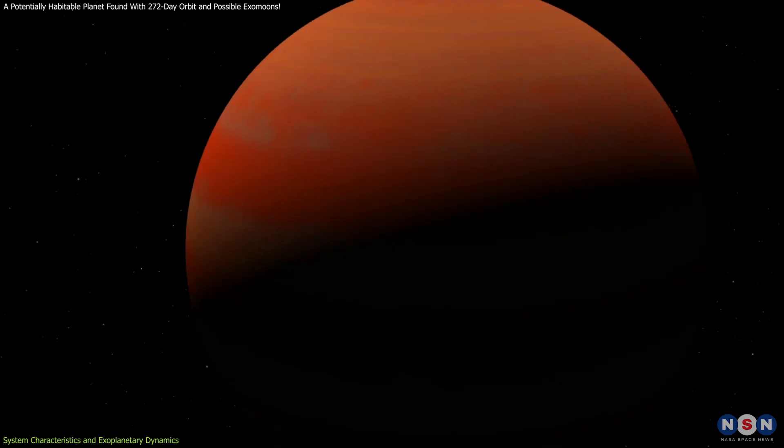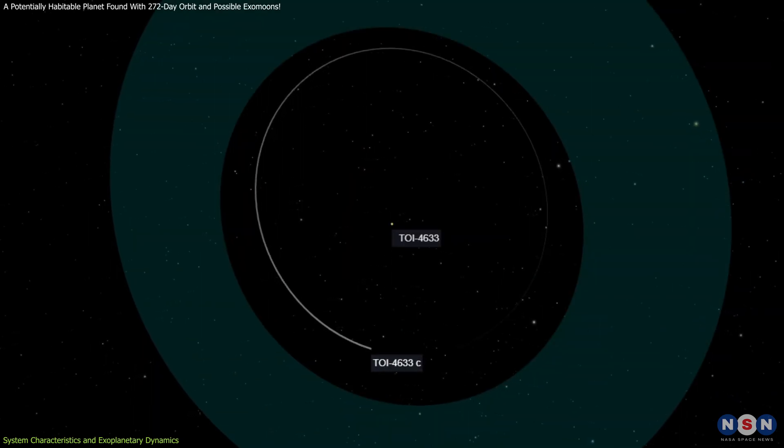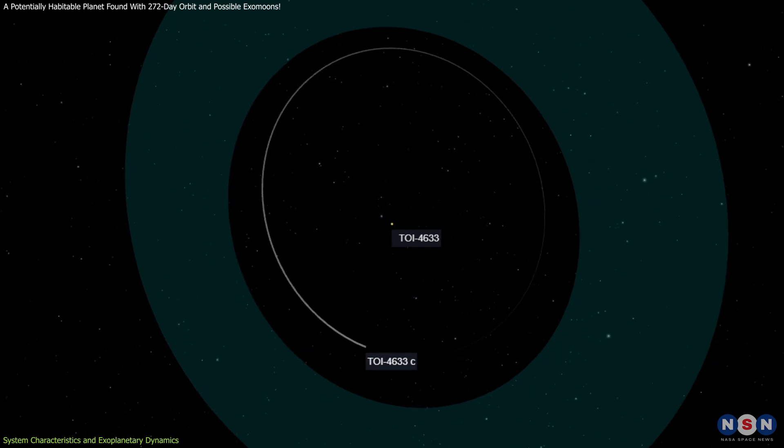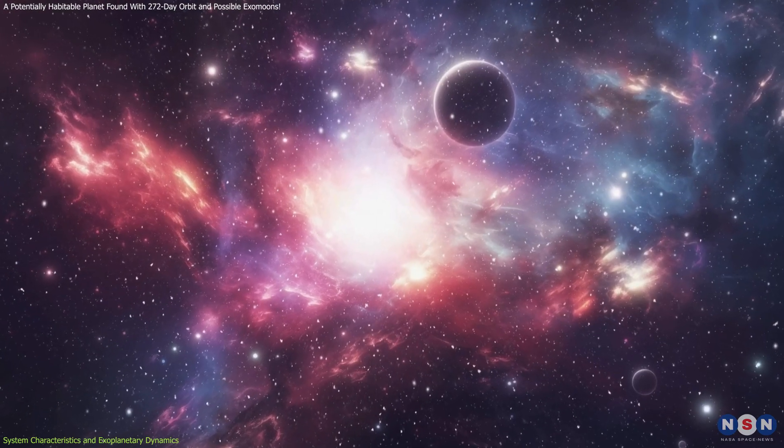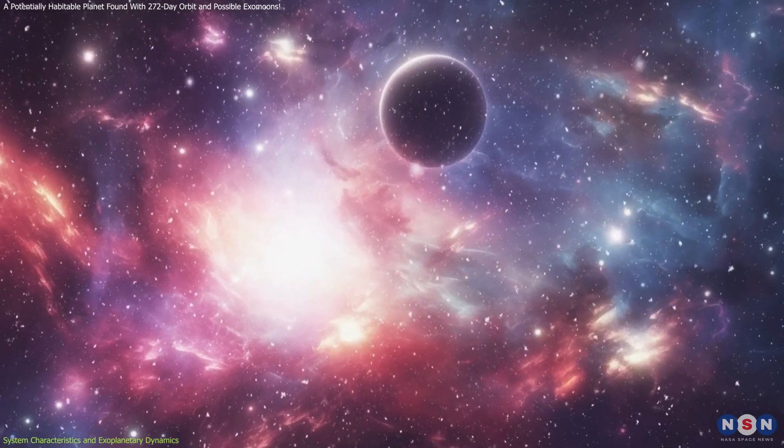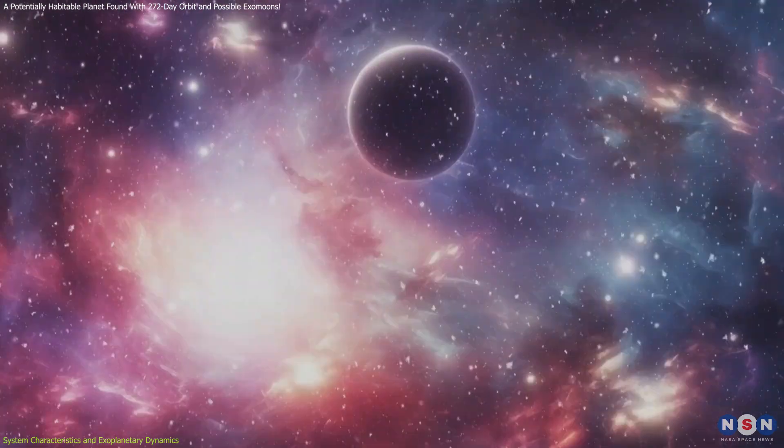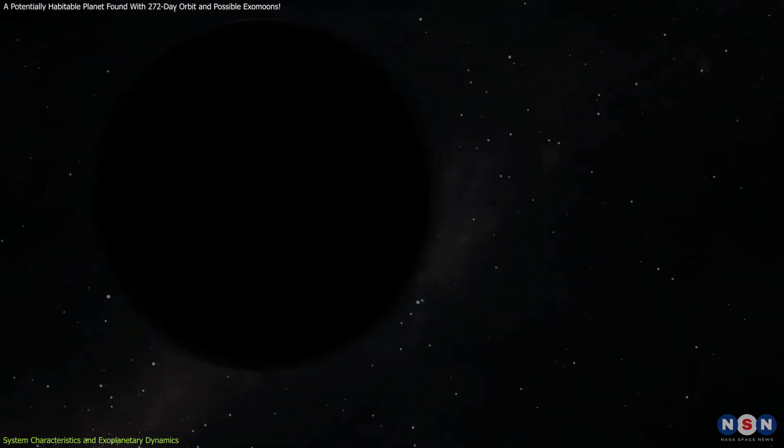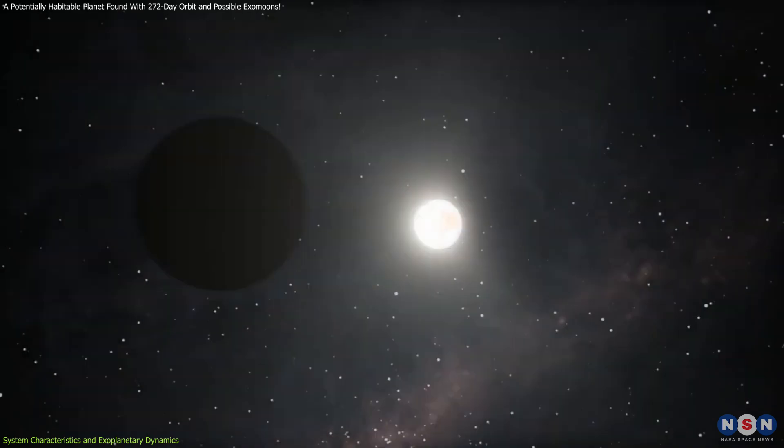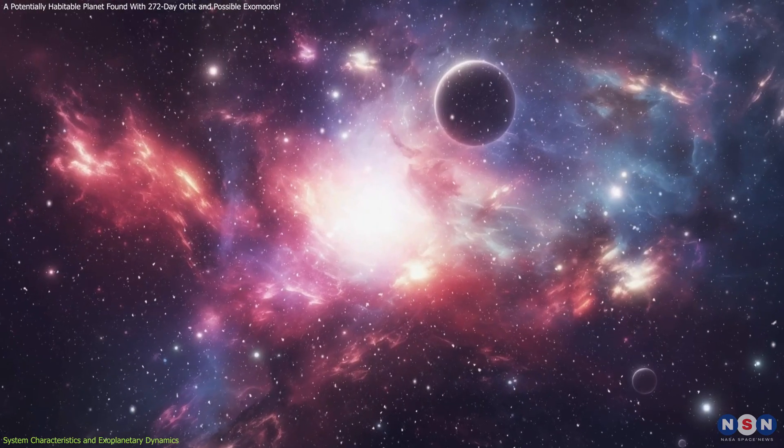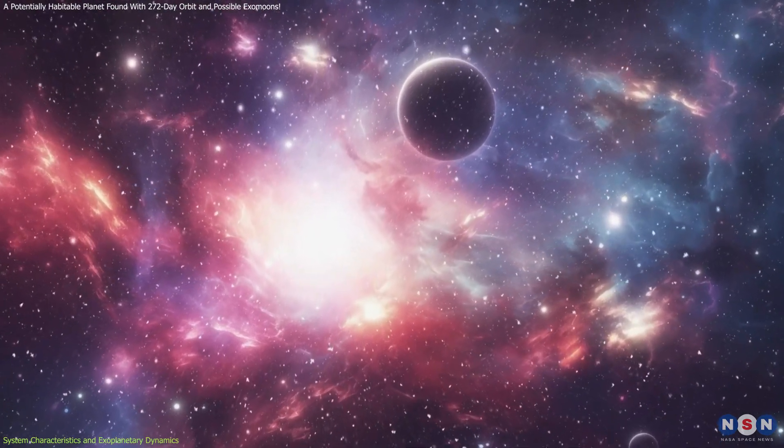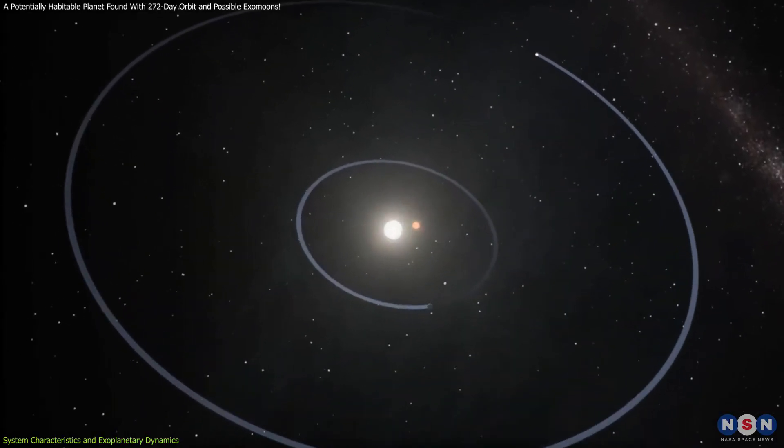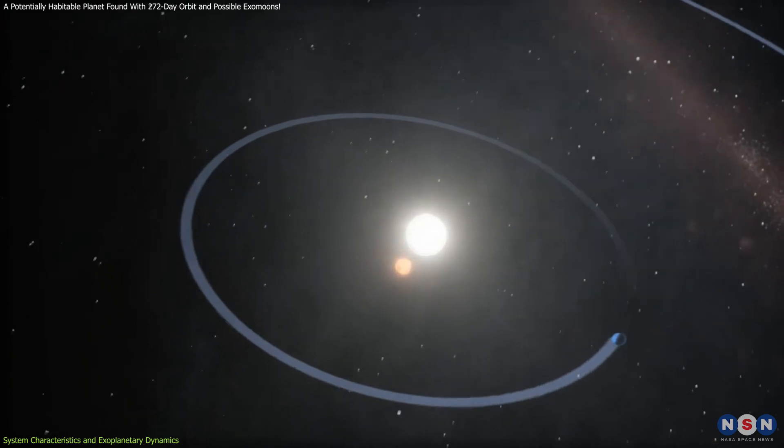In the case of this exoplanet, this environment may have influenced its long orbital period and its current position within the habitable zone. Researchers also suspect the presence of an additional, unconfirmed planet in the same system. This planet, with a 34-day orbit, further complicates the gravitational interactions within the system. If confirmed, this second planet would provide valuable insights into the formation and stability of planetary systems in binary star environments.